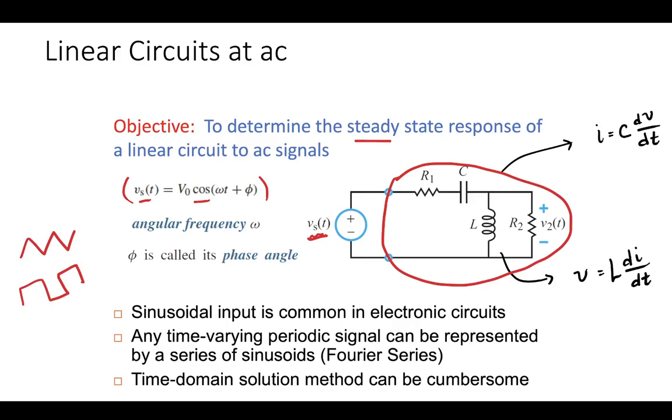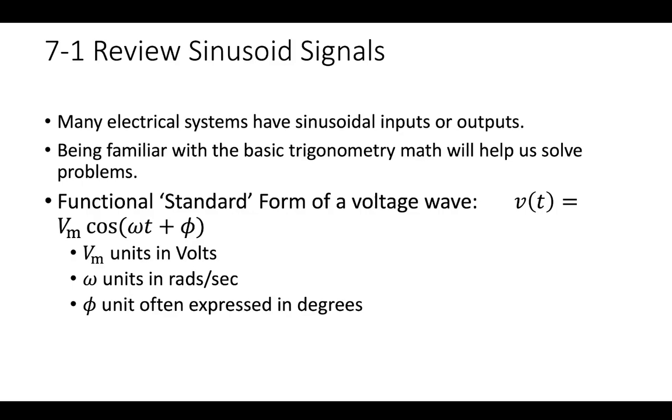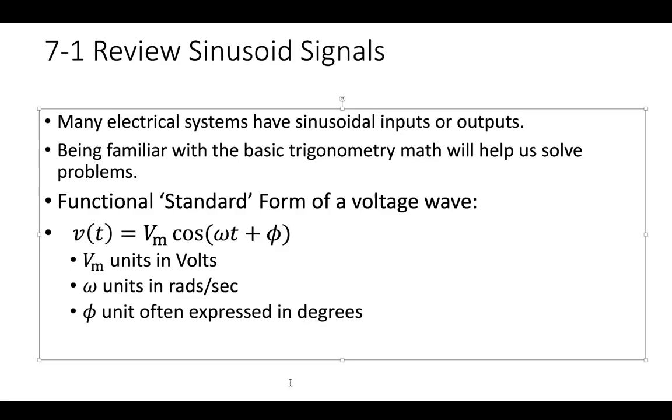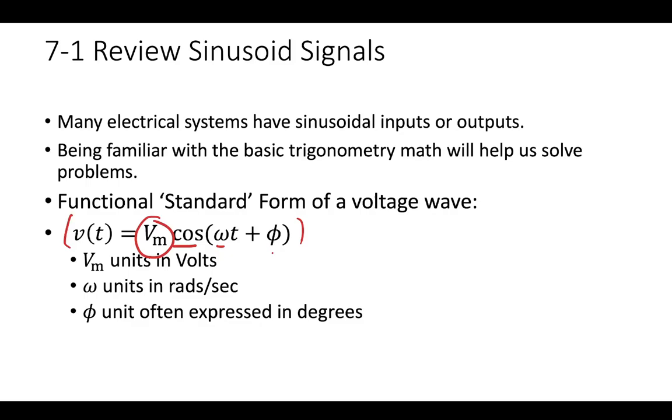So as we go through this section, we're going to be putting our sinusoidal signals into what we call a functional or standard form. So we want to be able to represent the sinusoid signals, that voltage input, we want to be able to represent it in a standard way so that we can apply it across many problems. And this is what our standard form is going to look like. Notice, it's a cosine wave, it has an amplitude, it has a radial frequency, and it has a phi, which is a reference angle.